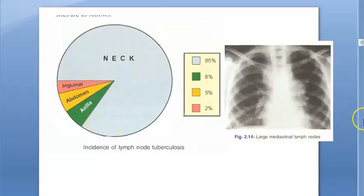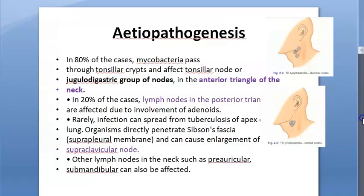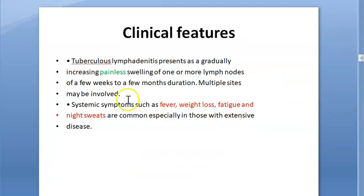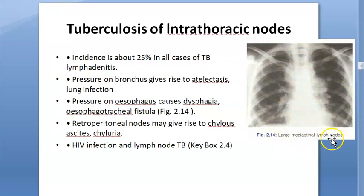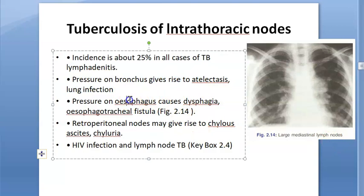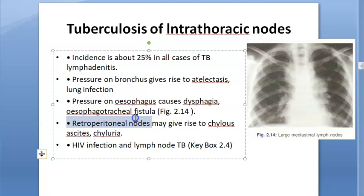Clinical features include painless swelling of the lymph nodes, and patients can also have fever, weight loss, fatigue, and night sweats — typical symptoms of tuberculosis. For intrathoracic lymph nodes, pressure on the bronchus can cause atelectasis and lung infection; pressure on the esophagus can cause dysphagia or esophageal fistula. Retroperitoneal nodes can give rise to chylous ascites or chyluria.